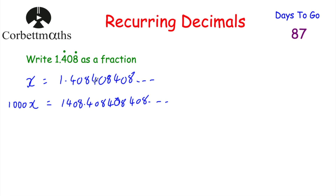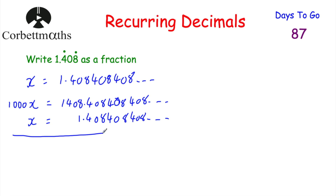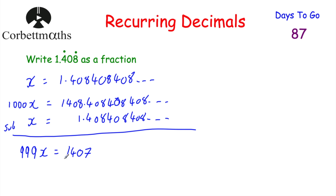We've got two numbers with the same recurring bit after the decimal point. Writing x beneath 1000x: x equals 1.408408408... and subtracting. 1000x minus 1x gives 999x. On the right-hand side, 1408.408408... minus 1.408408... — the decimal parts cancel out, leaving 1408 minus 1 equals 1407. So 999x equals 1407. Dividing both sides by 999 gives x equals 1407 over 999.